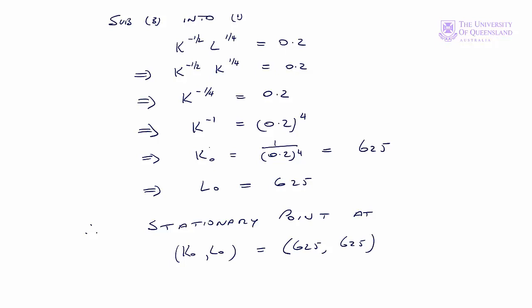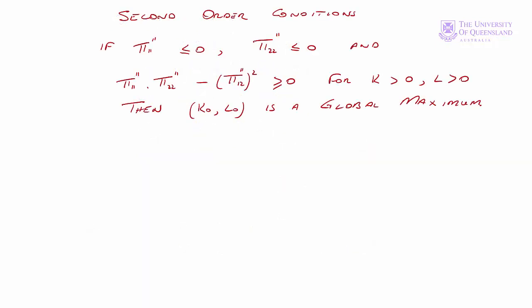Our next step is to show that this stationary point is a maximum. We'll do that using the second order conditions. Here we have the test for the second order conditions: if π₁₁ ≤ 0, π₂₂ ≤ 0, and π₁₁ times π₂₂ minus π₁₂ squared is ≥ 0 for all K and L in our domain, then our profit function is a concave function and (K₀, L₀) is a global maximum. So I'll write out the first order partials so we can see where the second order partials are coming from.